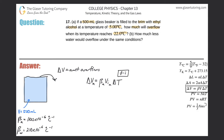Now let's calculate. The change in volume of the alcohol equals β, which is 1100 × 10⁻⁶, multiplied by the initial volume. They gave it in milliliters, but I'm going to convert to liters, so that's 0.5 L, multiplied by the change in temperature — that's the final value of 22 degrees minus the initial value of 5 degrees.